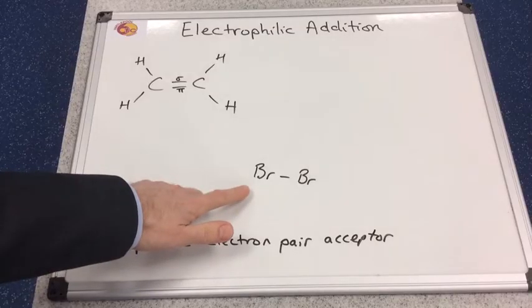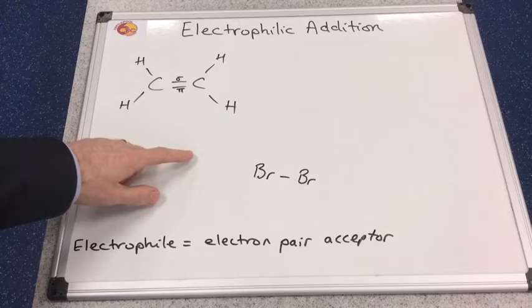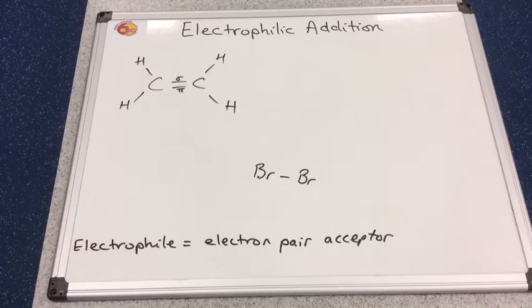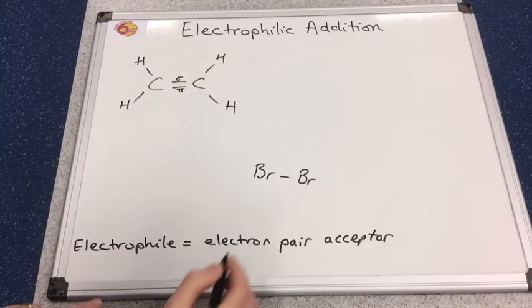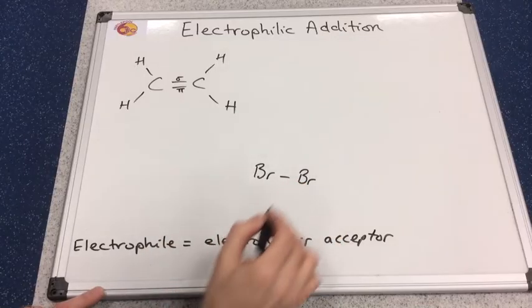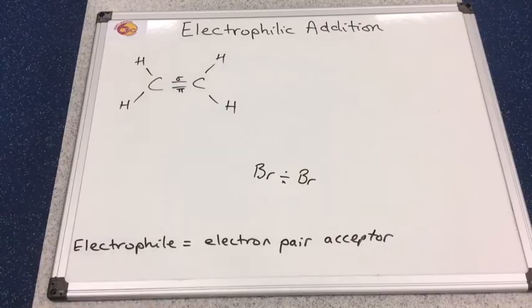Here's a halogen molecule, bromine, and if you can imagine it quite a distance away from the alkene, what do we know about molecules such as bromine? It's non-polar because these atoms have identical electronegativities. So the electron pair in that bond is exactly in the middle, so it's non-polar.